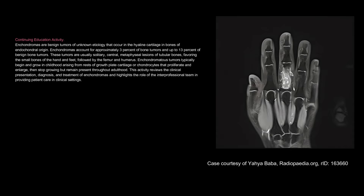Enchondromatous tumors typically begin and grow in childhood, arising from rests of growth plate cartilage or chondrocytes that proliferate and enlarge, then stop growing but remain present throughout adulthood. This activity reviews the clinical presentation, diagnosis, and treatment of enchondromas and highlights the role of the interprofessional team in providing patient care in clinical settings.